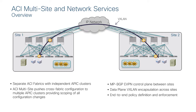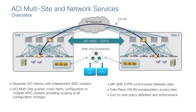To establish VXLAN tunnels between sites, a control plane is needed — MP-BGP EVPN — running between the spine nodes of the different fabrics. The EVPN control plane exchanges MAC and IP reachability information for endpoints communicating across sites. To determine which endpoints communicate across sites, policy is applied via the Multisite Orchestrator — the third functional component — which serves as the single pane of glass for provisioning policies that are deployed across different APIC domains to enable secure connectivity between endpoints in different sites.